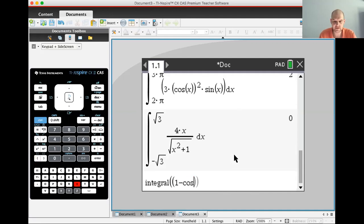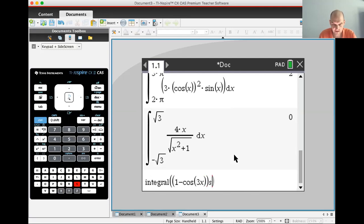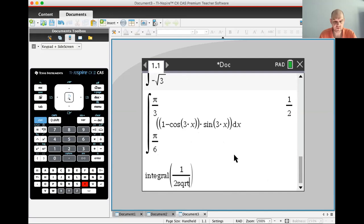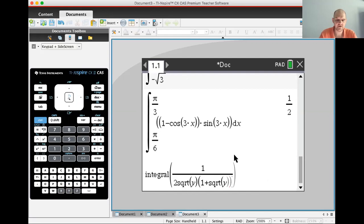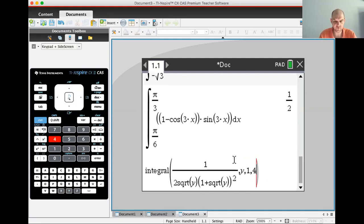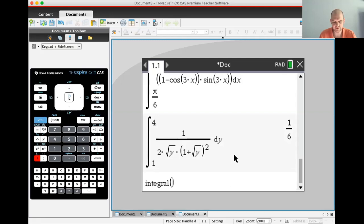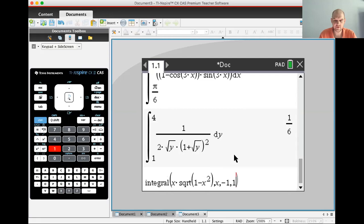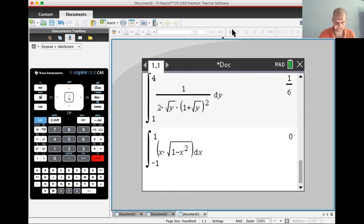Integral 1 minus cosine of 3x, sine of 3x, x, pi over 6 to pi over 3. 1 half. We did all right on these. Integral 1 over 2 square root of y, quantity 1 plus square root of y squared, comma, y, 1 to 4. It's 1 sixth. And then integral, this one should be zero. X times, I'm using x pretty much, I mean, except for where I use y. Negative 1 to 1. Zero, because it's odd. Don't get fooled. Whew.